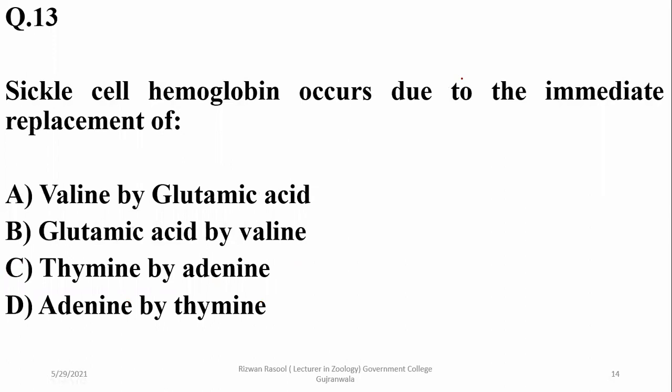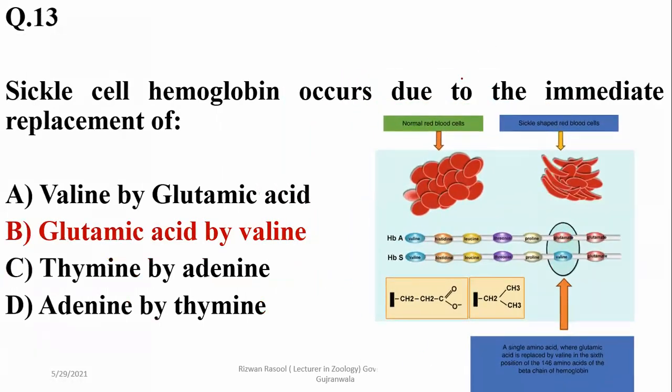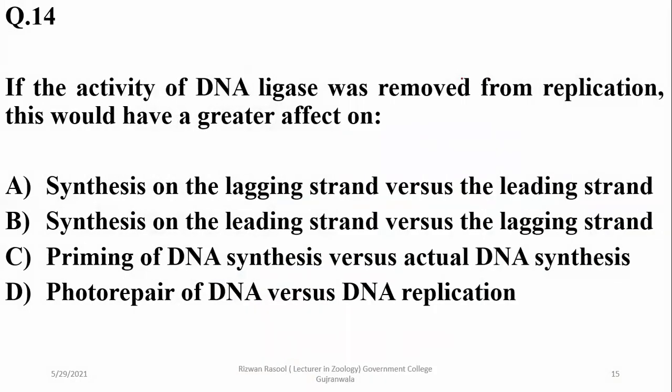Sickle cell hemoglobin occurs due to the replacement of glutamic acid by valine in the beta chain. And number 14: if the activity of DNA ligase was removed from replication, this would have a greater effect on the lagging strand, because the lagging strand requires fusion of Okazaki fragments compared to the leading strand. So synthesis on the lagging strand would be more affected — so alpha.